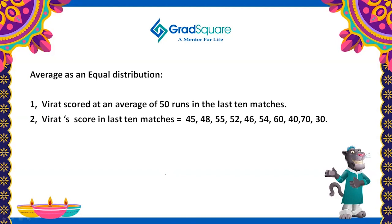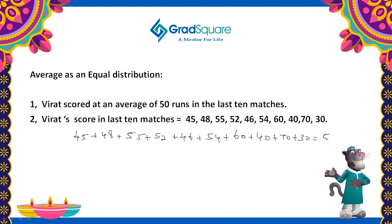According to the first statement, Virat scored at an average of 50 runs. It does not mean he scored exactly 50 runs in all 10 matches. It means if I take 50 as the value and substitute it for all 10 matches, my total score would be the same. The total score of Virat in the last 10 matches is 45 + 48 + 55 + 52 + 46 + 54 + 60 + 40 + 70 + 30, which equals 500.